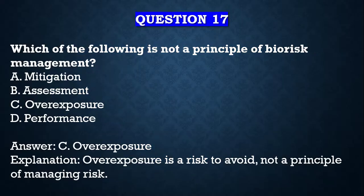Question number seventeen: which of the following is not a principle of biorisk management? A) Mitigation, B) Assessment, C) Overexposure, D) Performance. The answer is C, overexposure, because overexposure is a risk you want to avoid — it is not a principle of managing risk. Mitigation, assessment, and performance are principles of the AMP model, but exposure is a risk to be avoided.